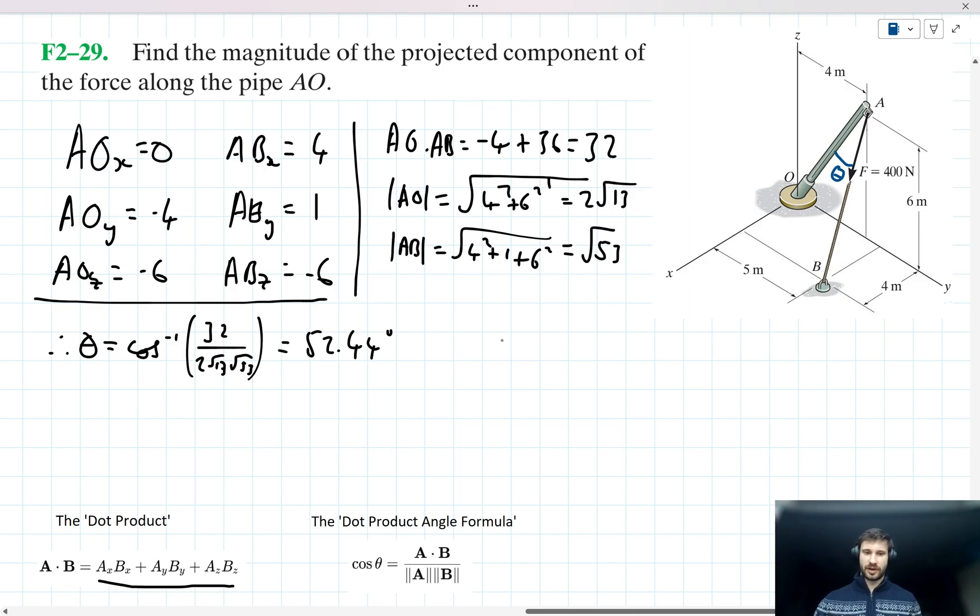OK, so we're looking for that component FAO. So we can diagram this. So let's just draw F. So this is our force F here, I'll label them up in a sec. This is our complement, and this is what we're looking for, FAO. Let's just add some geometry to this as well. So we understand now, having solved for theta, that this angle is 52.44 degrees.